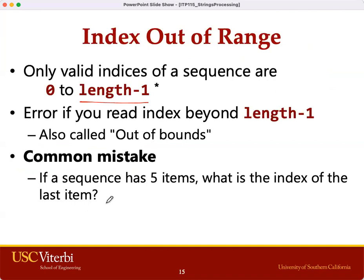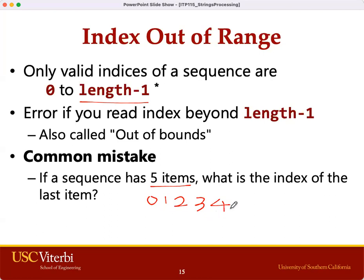A typical mistake: for example, if the sequence has 5 items, the last valid index of the sequence or string should be 4, because 5 items give us indices of 0, 1, 2, 3, and 4. So 4 is the last valid index of the last item in the sequence, not 5.